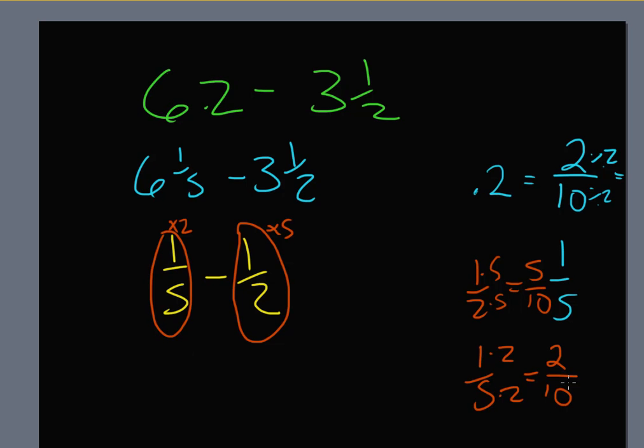So I'm going to rewrite. My one-fifth converted to two-tenths. So I'll have two-tenths minus one-half converted to five-tenths. So I have minus five-tenths. Right? So can I do this? Can I do two minus five? No. So my two-tenths has to borrow from his friend the six. So I'm going to borrow one out of there. So that's going to become a five.